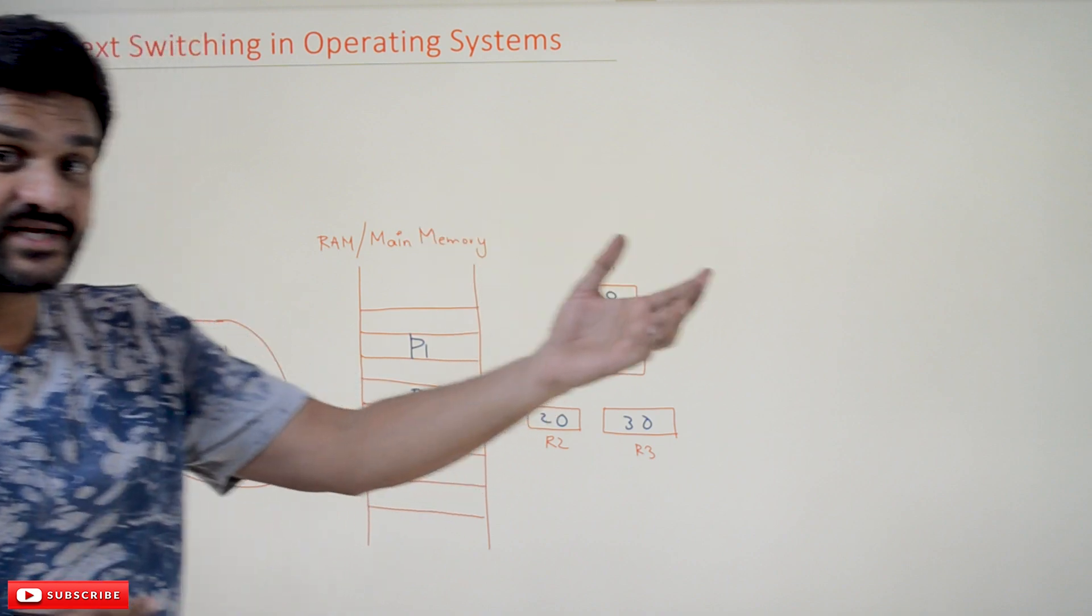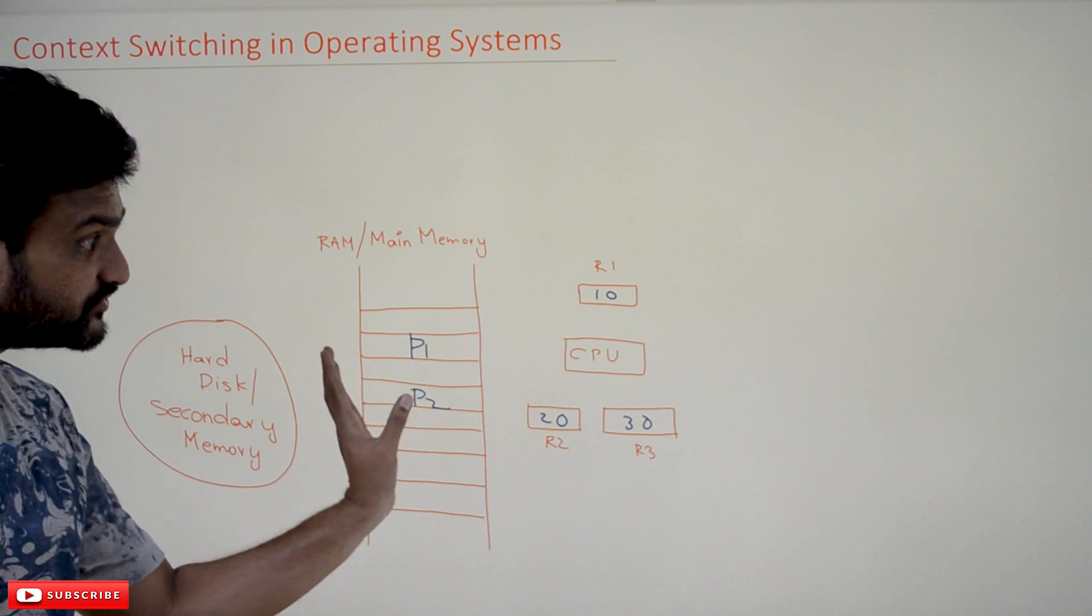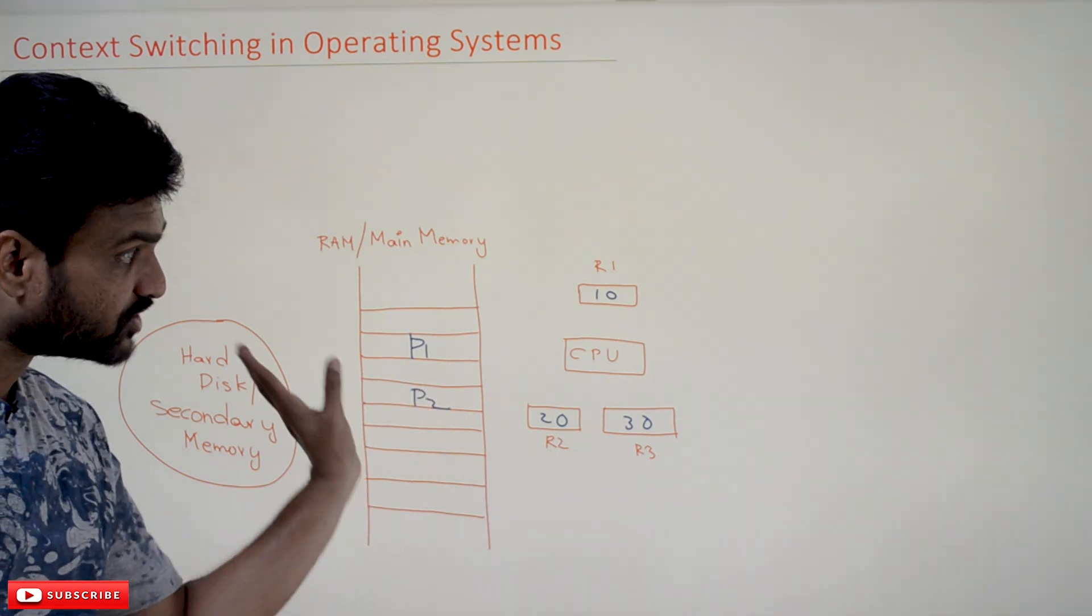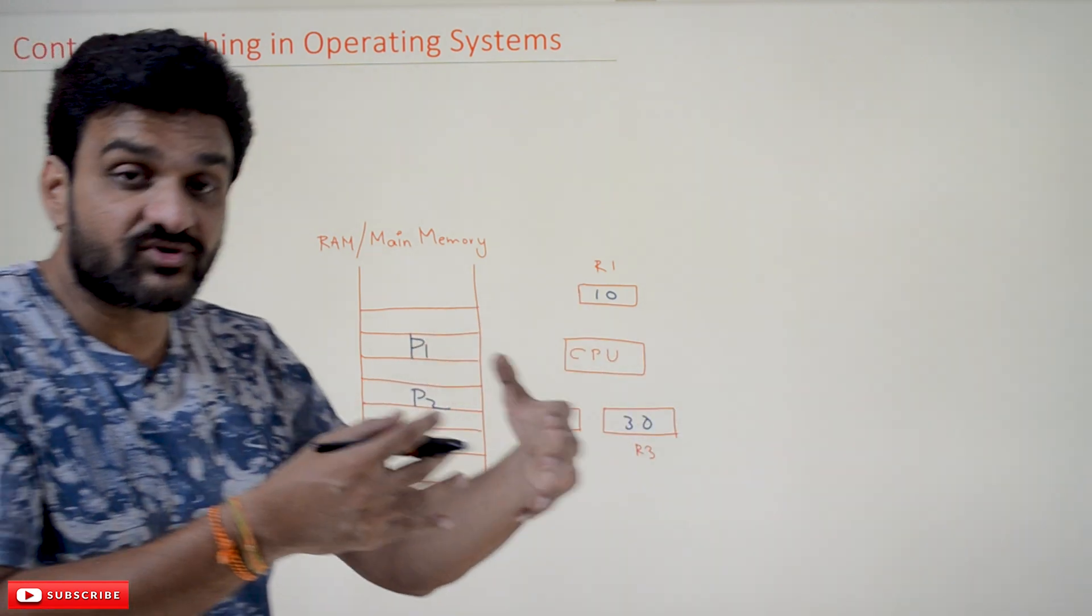And the details of the P1 - so wherever the process P1 has stopped previously in that previous execution, there may be some context that is there for P2. So all those details will get switched from the process control block to the general purpose registers.